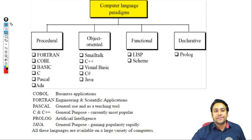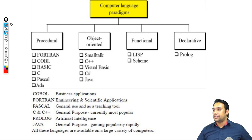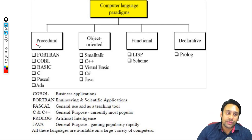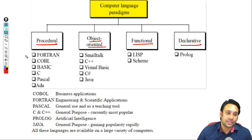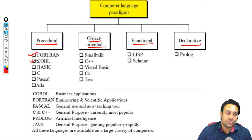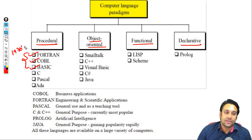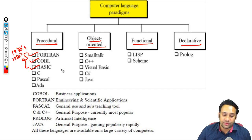There are various kinds of computer languages: procedural languages, object-oriented programming languages, functional languages, and declarative languages. In procedural languages, Fortran, COBOL, and Basic are examples — these were very famous in the 1970s and 1980s.